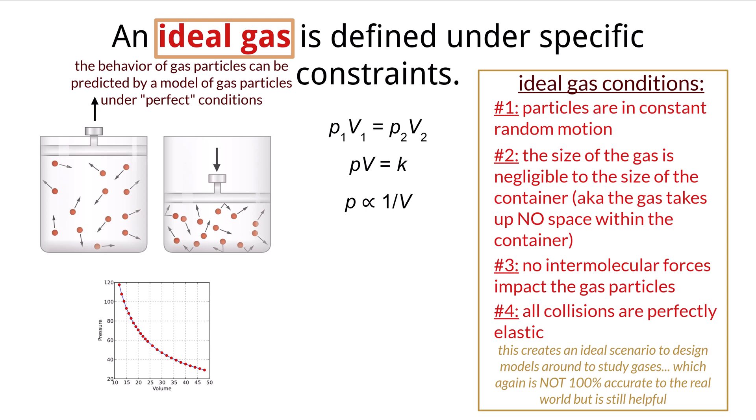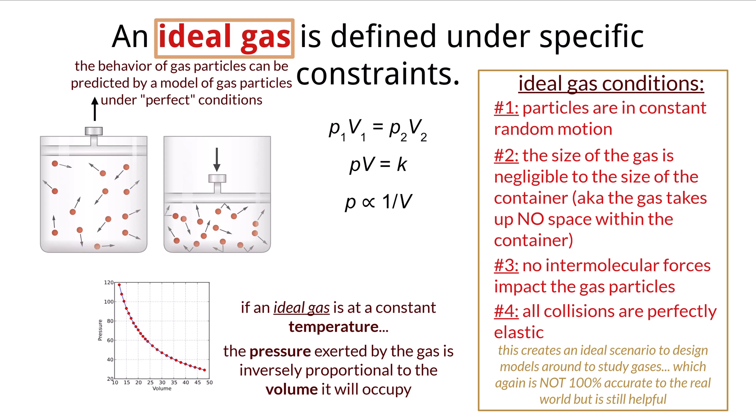One such scientist, Robert Boyle, established that if an ideal gas is at a constant temperature, the pressure exerted by the gas is inversely proportional to the volume of the container it resides in. So in this example, if we have ideal gas particles within a particular volume, and then we reduce the volume by half, it will double the amount of pressure exerted by the gas.